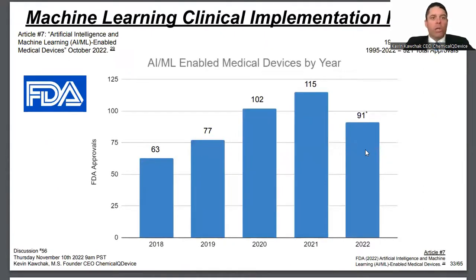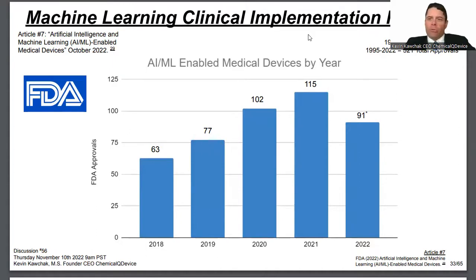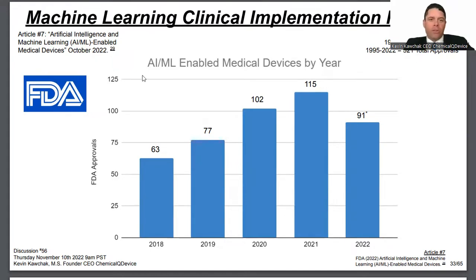The history is that medical devices, going back decades, have contributed to computerization and digital techniques in imaging and therapy. Medical physicists today want to gain more AI skills. Article seven is an October update on the number of FDA AI/ML-enabled medical devices by year. From 1995 through 2017 — over 20 years — only 73 approvals. Then: 63, 77, 102, 115 in subsequent years, and 91 so far this year. All years combined: 521 total approvals, with the biggest numbers in these past five years.